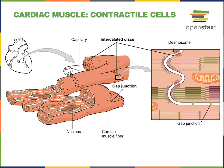Here we see an illustration showing the structure of contractile cells — the cardiac muscle fibers, or cardiomyocytes, responsible for producing contraction in the heart. Like skeletal muscle fibers, these contractile cells are striated, so cardiac muscle is striated like skeletal muscle.